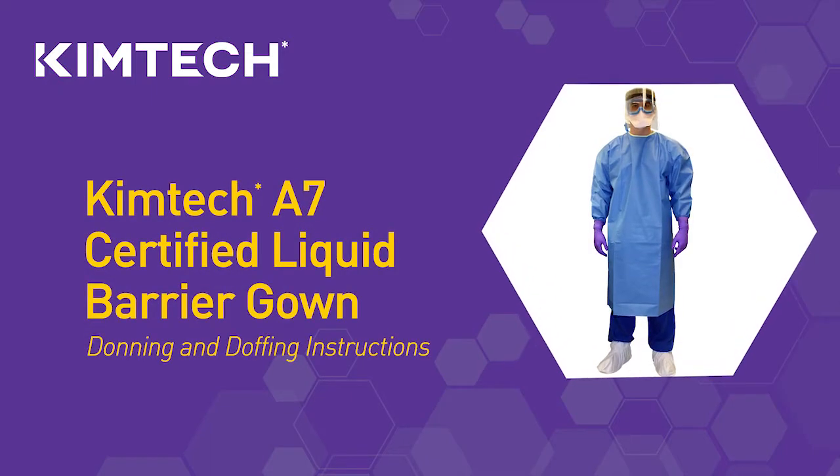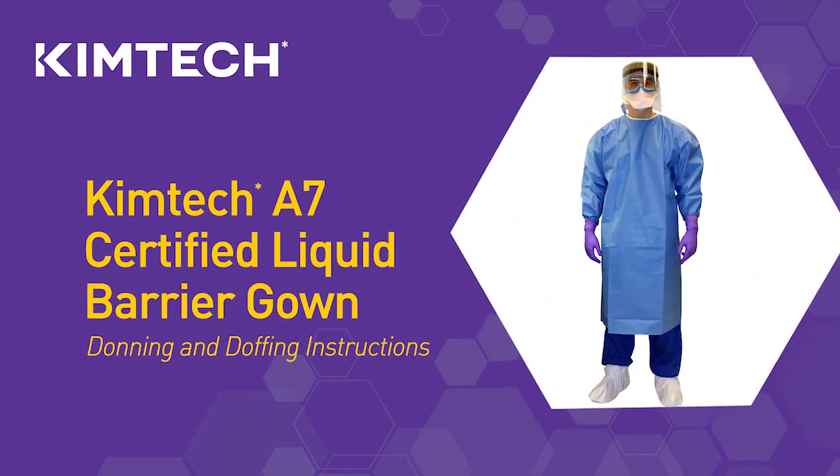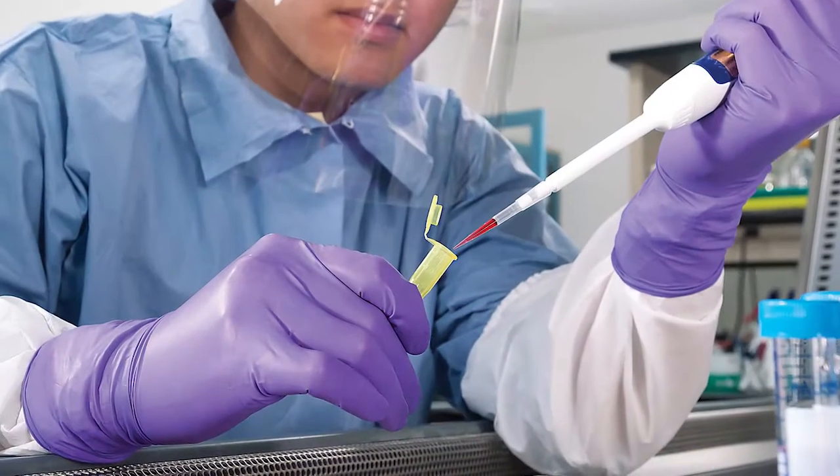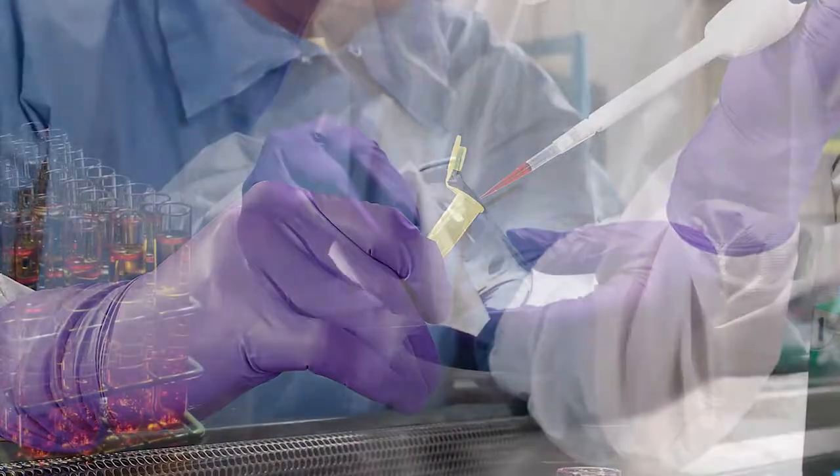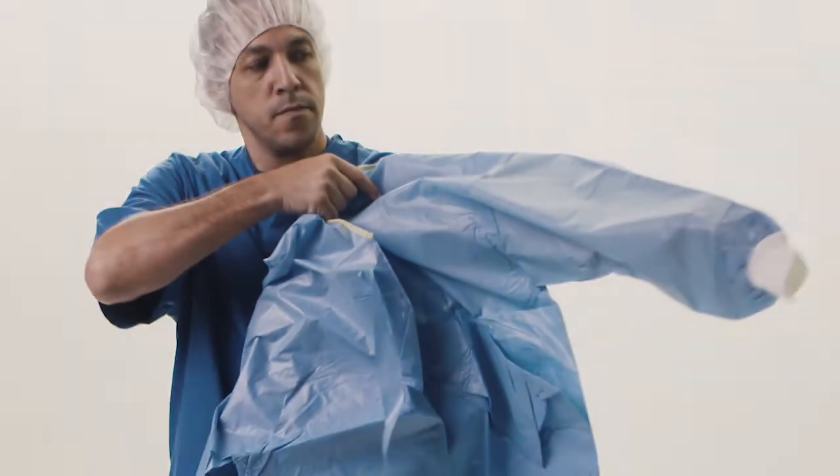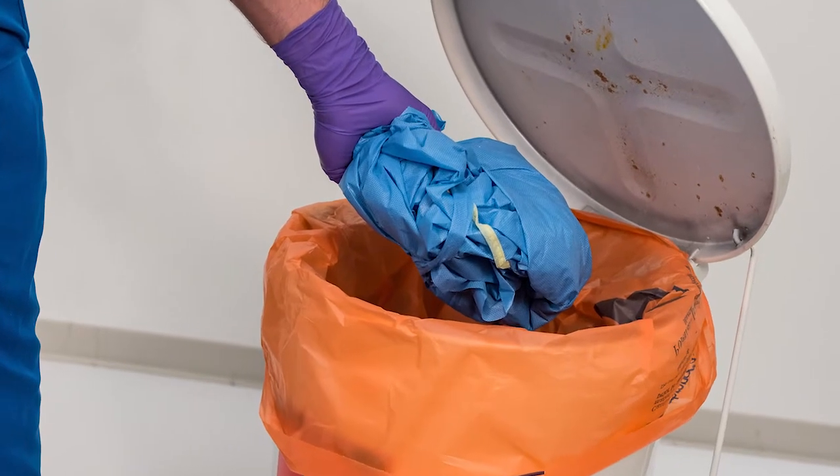The Chemtech A7 Certified Liquid Barrier Gown provides stringent barrier protection for your facility. It guards against spills and splashes from blood-borne pathogens, biologics, and other harmful liquids. And it's easy to put on and take off to reduce contamination risk and prevent liquids from getting on your skin.